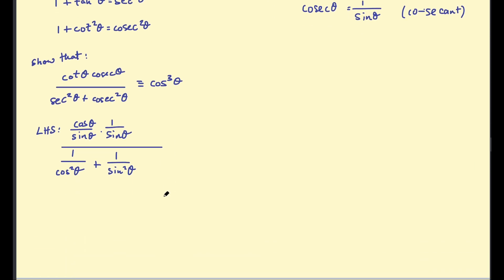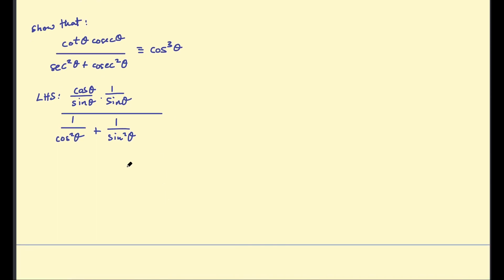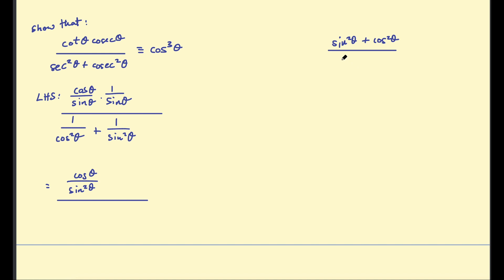It's looking a bit messy, so let's look at the numerator and denominator separately. The top line simplifies to cosine θ over sin²θ. For the denominator, combining those fractions by multiplying by each denominator gives sin²θ + cos²θ all over cos²θ · sin²θ.